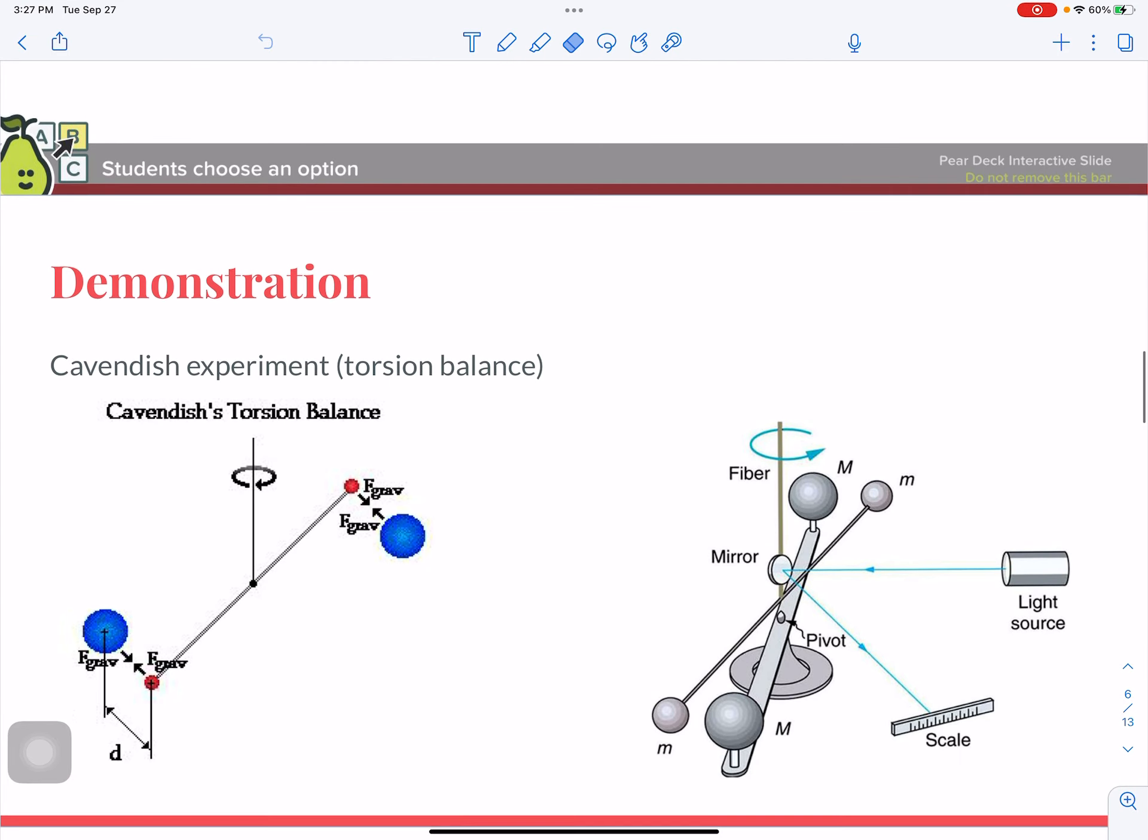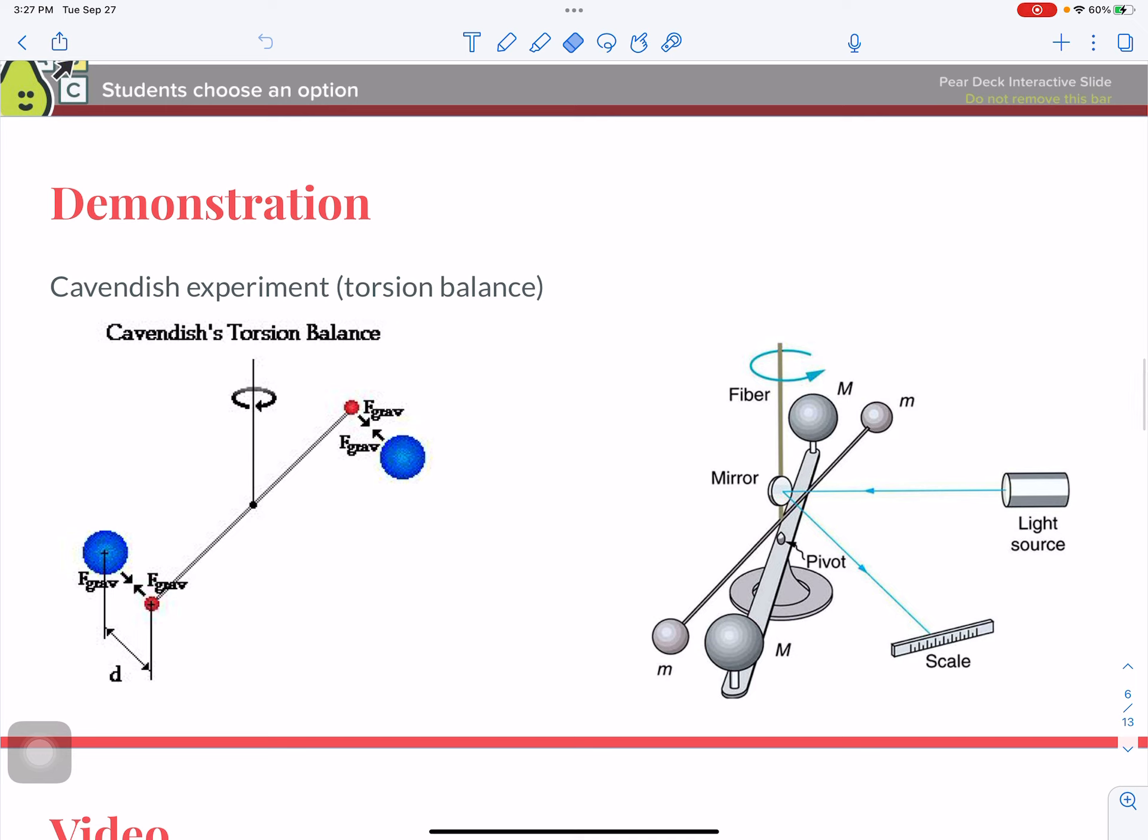Alright, so the answer to that, the quick answer is yes, there is a force of attraction. But we can't see it because the motion is probably extremely small because the force of gravity between the balls and the table is much larger. Sorry, force of friction between the balls and the table is much larger than the gravitational force of attraction between the two balls. So that's why we don't see them move because the friction is so large.